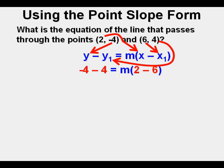And here are the numbers in red plugged into the equation. On the left side, we have negative 4 minus 4, which simplifies to negative 8. And on the right side, we have 2 minus 6, which equals negative 4. So we have negative 4m on the right side.